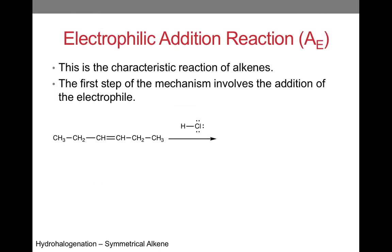Electrophilic addition reactions are the characteristic reaction of alkenes. You will notice a general pattern in the mechanisms for these reactions. The first step of this reaction is the addition of the electrophile. Since we are adding HCl, this is a hydrohalogenation reaction. Let's identify the nucleophile and the electrophile in this example.